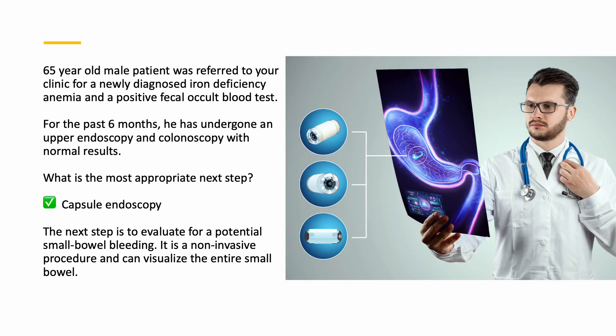A 65-year-old male patient was referred to clinic for newly diagnosed iron deficiency anemia and a positive fecal occult blood test. For the past 6 months he has undergone an upper endoscopy and a colonoscopy with normal results. The most appropriate next step is to order a capsule endoscopy to evaluate for a potential small bowel bleeding. It is a non-invasive procedure that can visualize the entire small bowel.